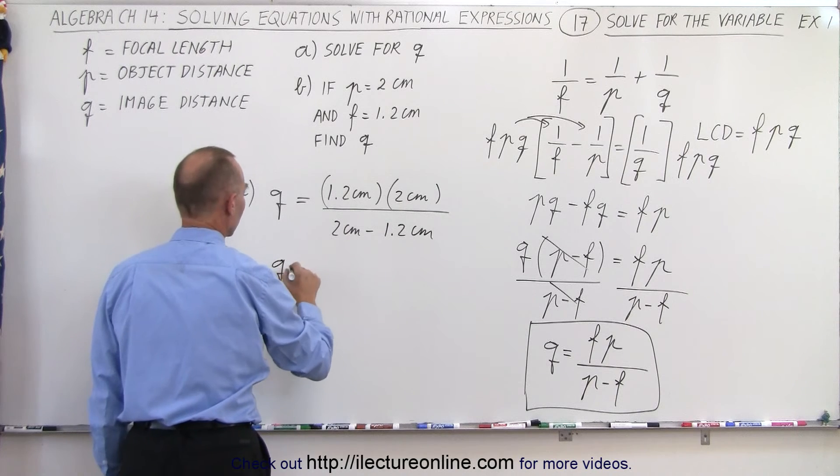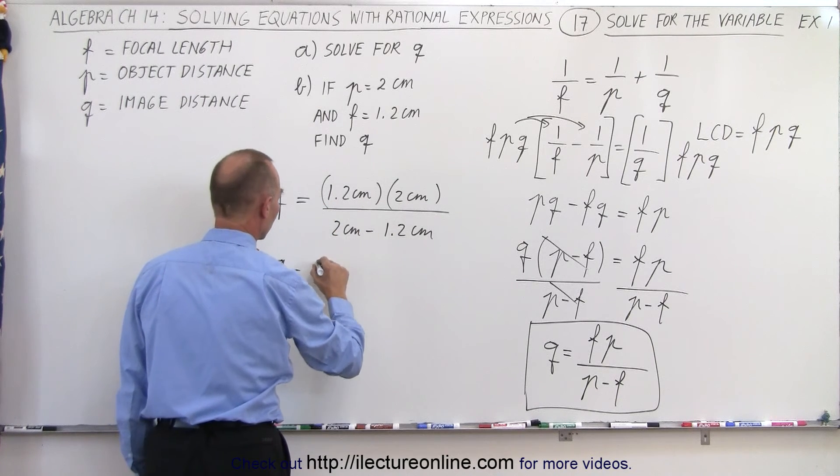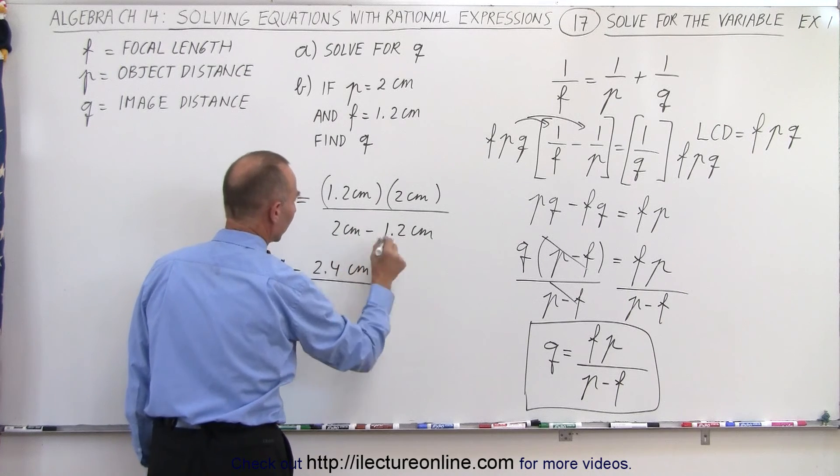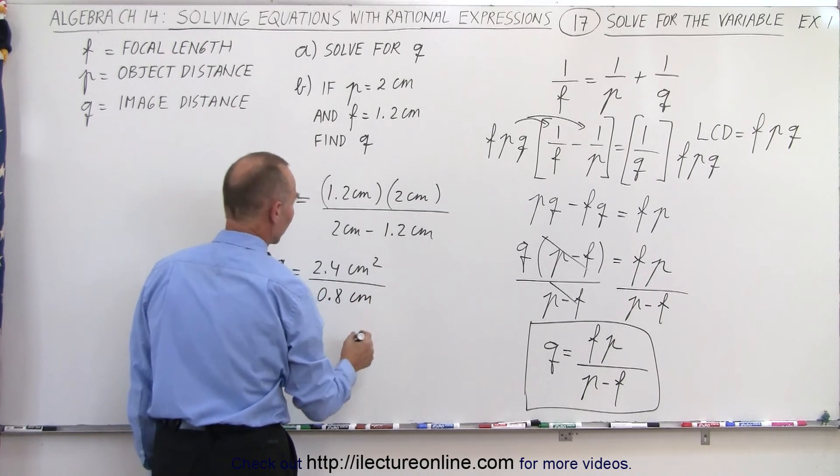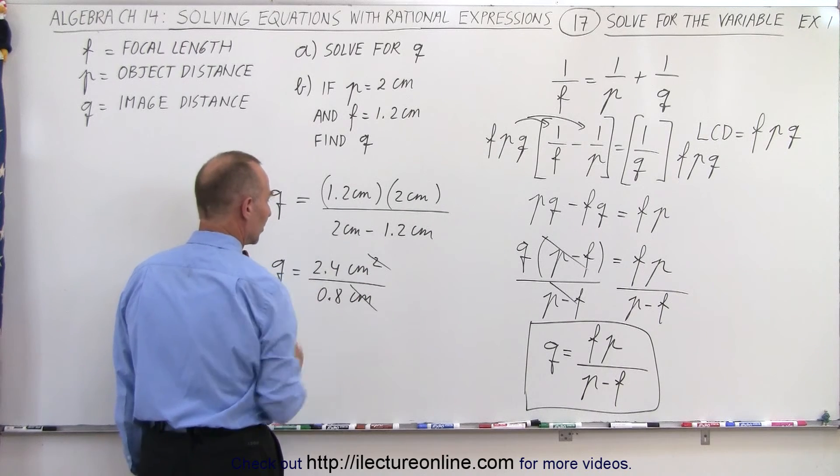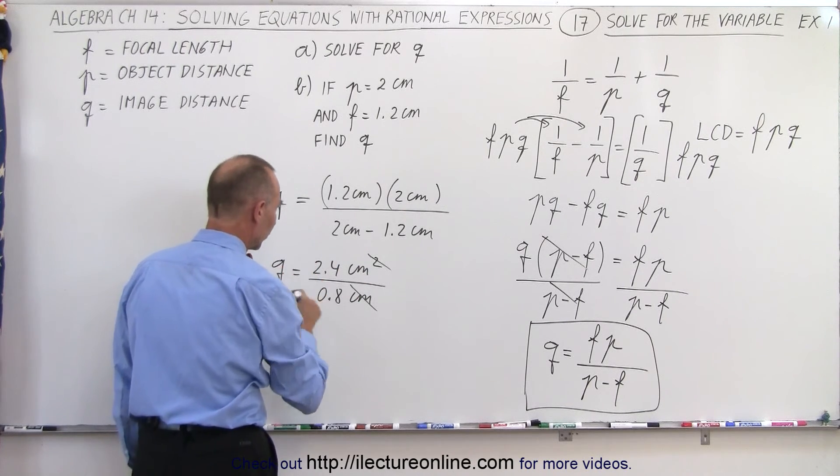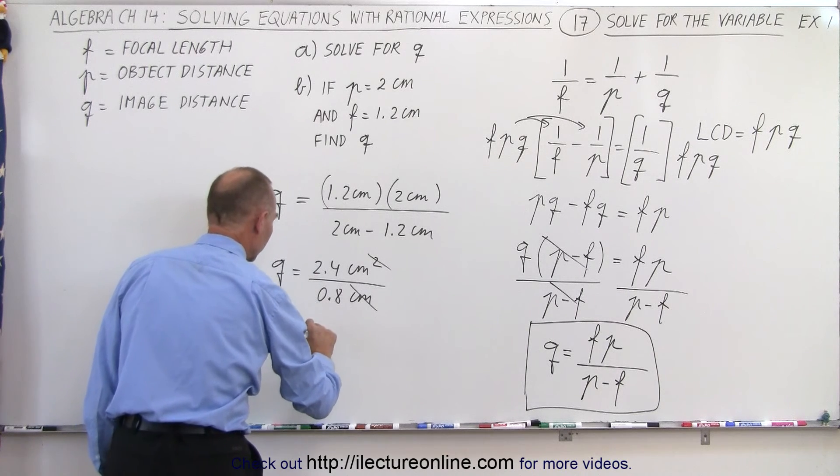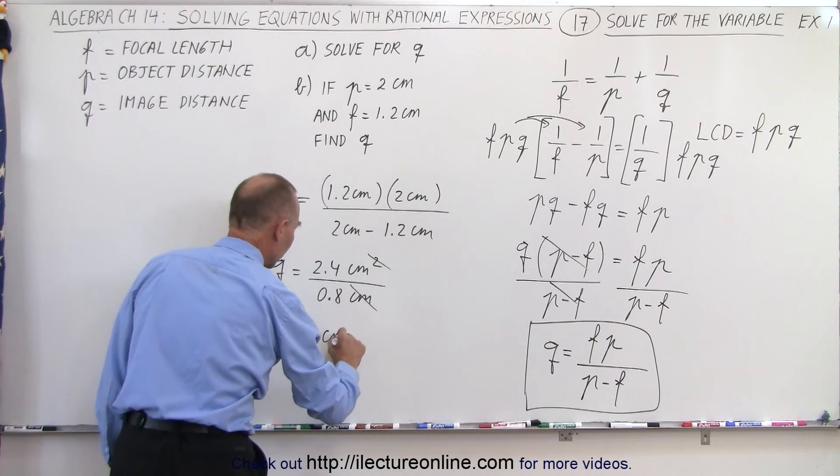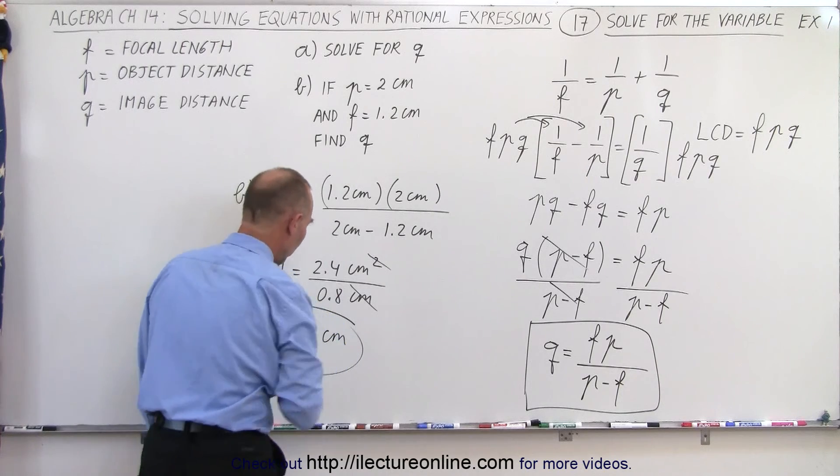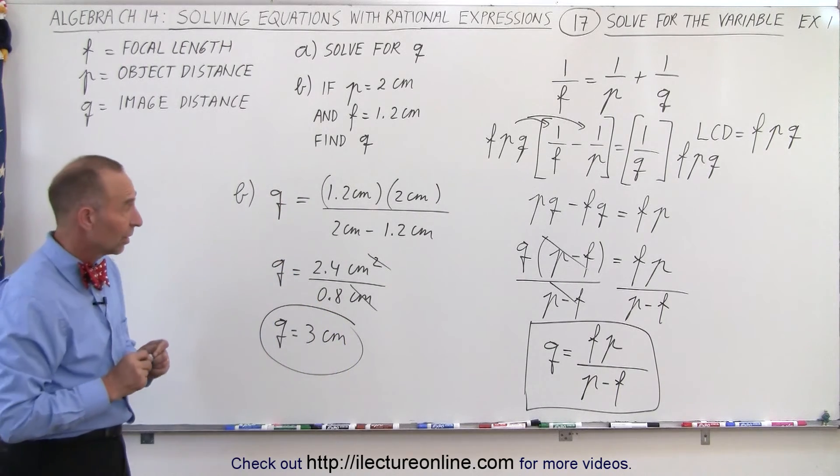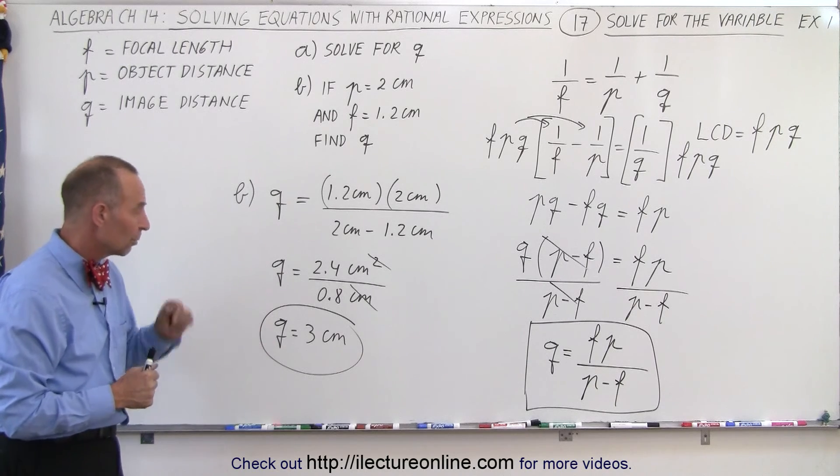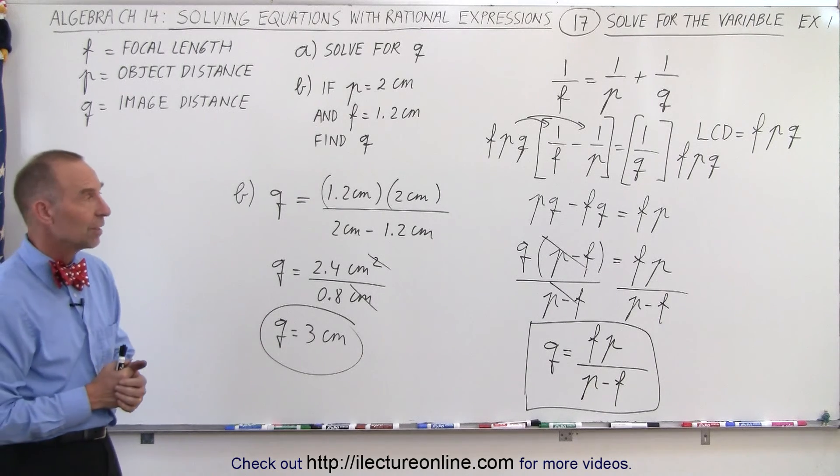So, Q is equal to 1.2 times 2, which is 2.4 centimeters squared, divided by 0.8 centimeters. Now, the centimeters cancels after centimeters squared, and 2.4 divided by 0.8, that would be Q is equal to 3 centimeters. And that would be the final result. If the object is at 2 centimeters, the focal length is 1.2, the image distance will be at 3 centimeters.